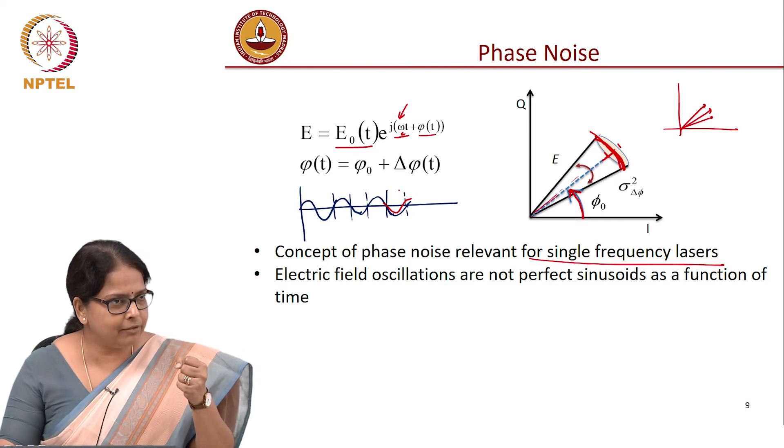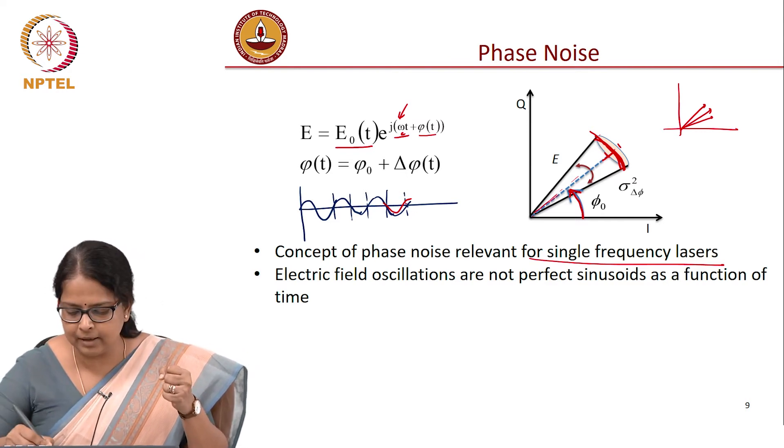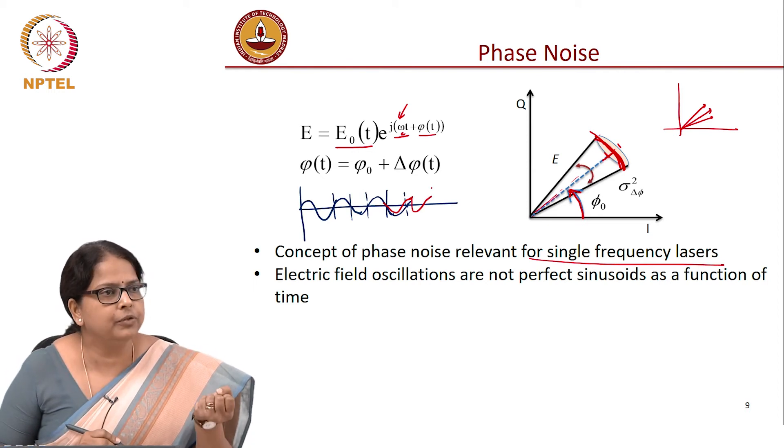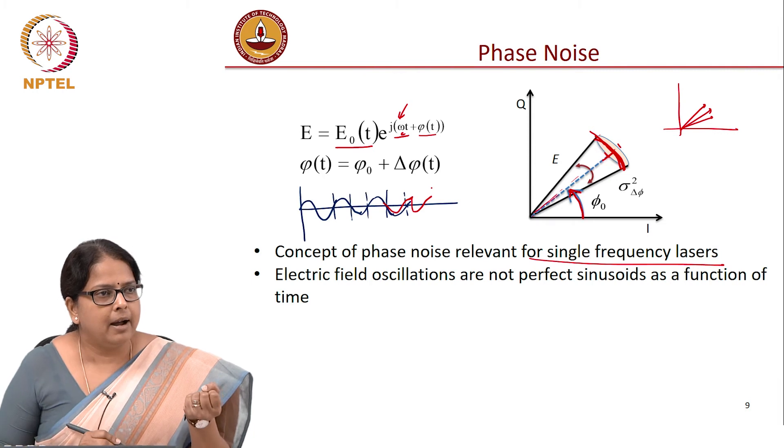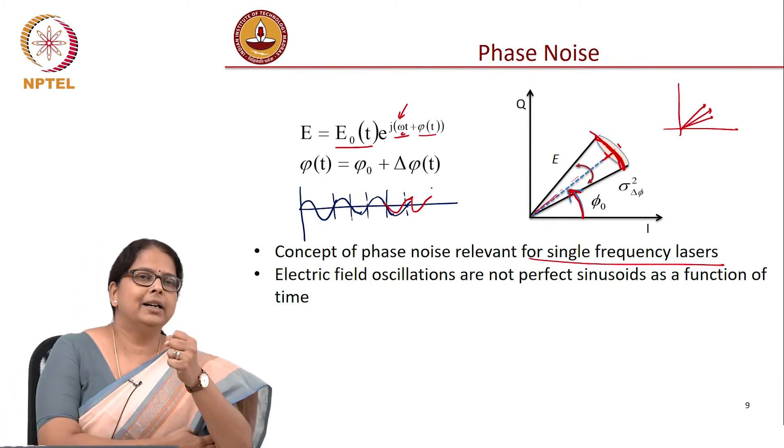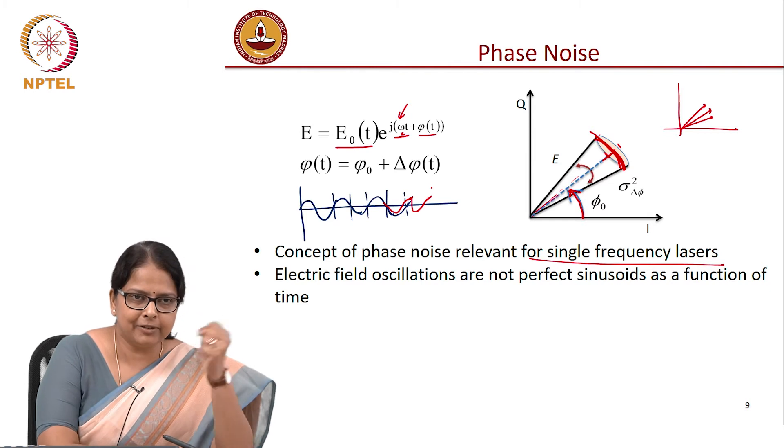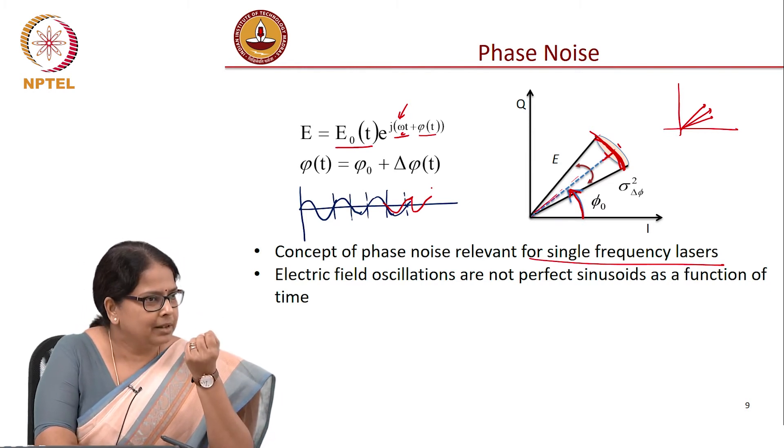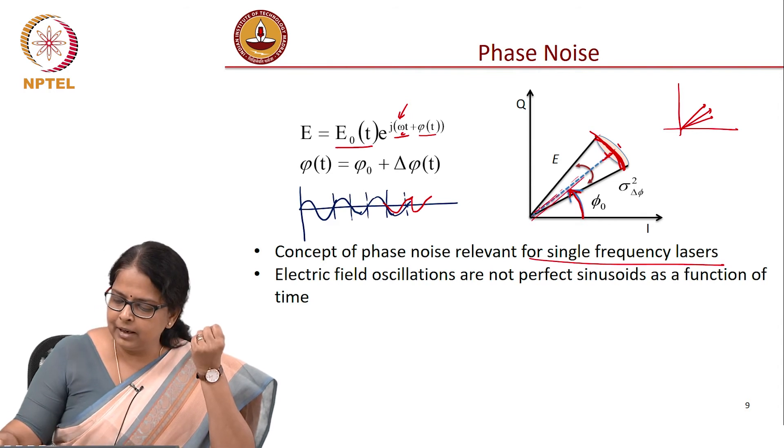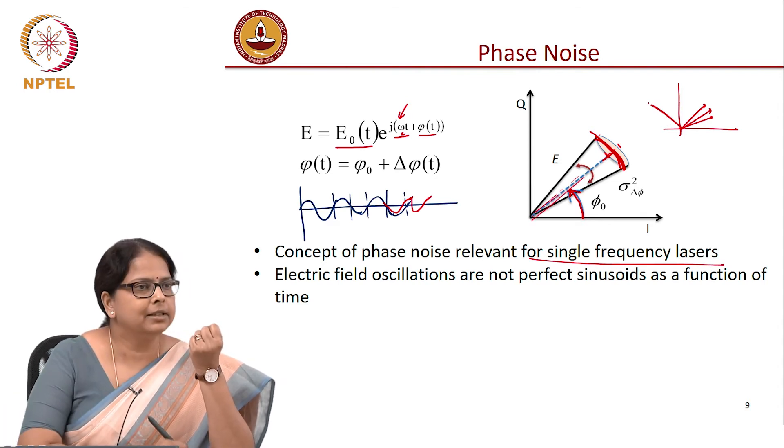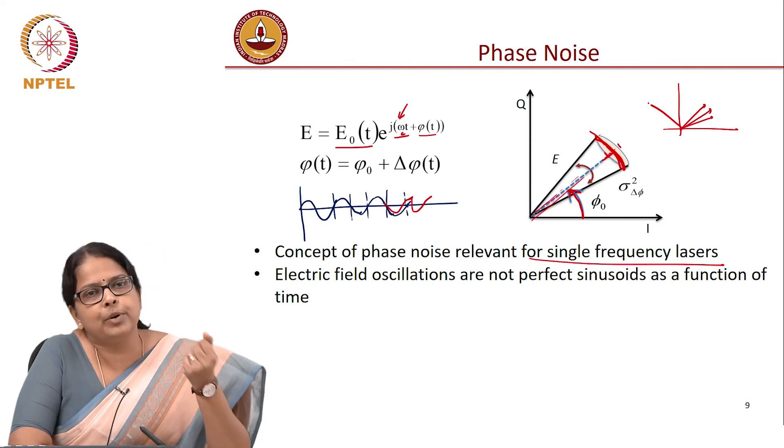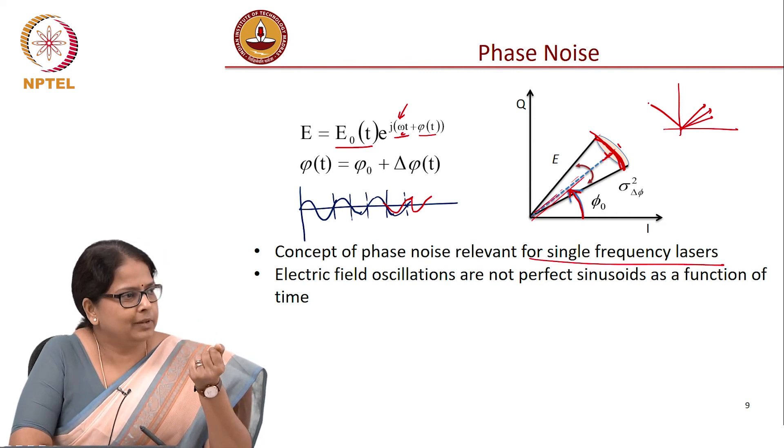You could also have a case where the phase, instead of continuing this way, abruptly changes this and starts this way. That is also phase noise. But the beauty of the laser system is that the phase noise, it does not jump that way. Suddenly from here, it will not start oscillating here. It is a random walk process.